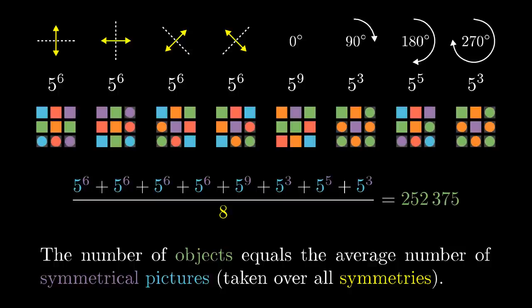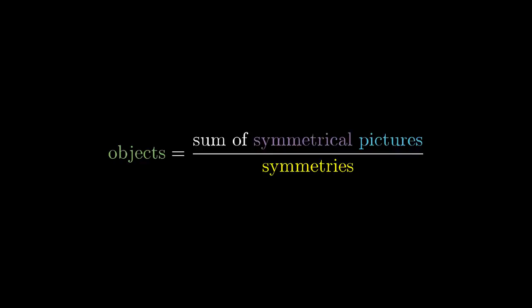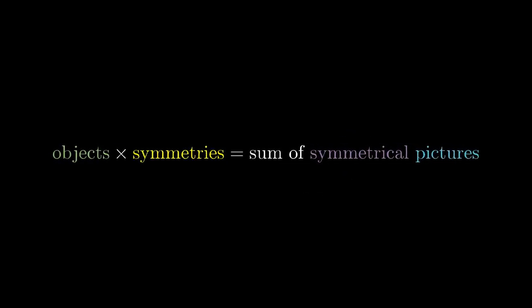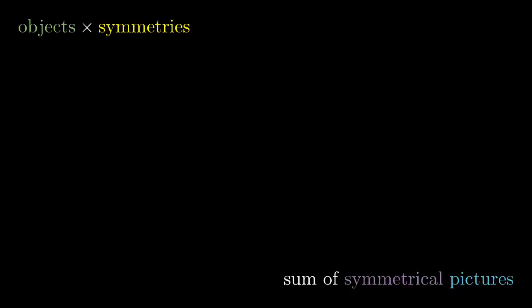And now why it works. What kind of a mathematician would I be if I required you to just believe me without providing a proof? And don't worry, it is not going to be fake this time. We want to show that the number of objects is the sum of symmetrical pictures divided by the number of symmetries. That is the same as to show that the number of objects times the number of symmetries is the sum of the symmetrical pictures. So we multiply the objects by the symmetries and show that we actually get the sum of the symmetrical pictures.